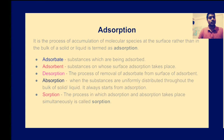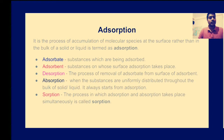Adsorbate refers to the substance which is being adsorbed — in the example of dust and a table, the dust particles are the adsorbate. Adsorbent refers to the substance on which adsorption is taking place — the table surface is the adsorbent. Desorption is the process of removal of adsorbate from the surface of the adsorbent; it is essentially the reverse of adsorption.